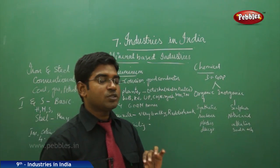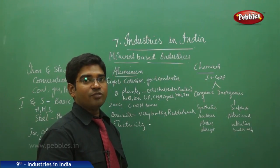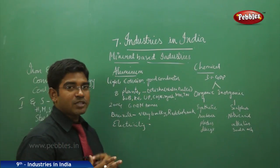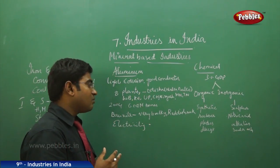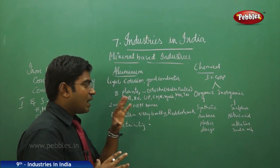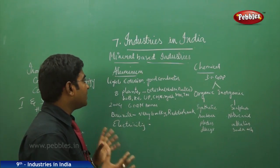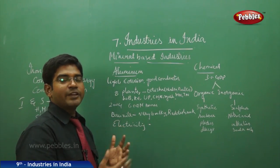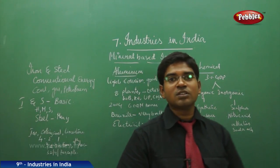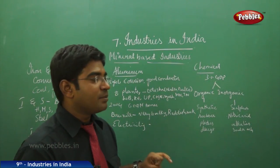Aluminum is mainly used in making aircraft industries because it is very light in weight. The basic source required for making aluminum is bauxite, a mineral needed in large quantities — it is a reddish rock that is processed to make aluminum. A continuous supply of electricity is also required to run aluminum industries. These two — bauxite and electricity — are the major factors for setting up aluminum industries.